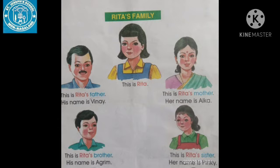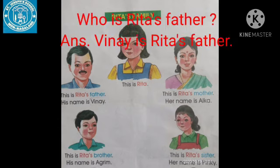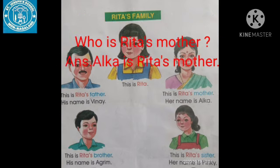Now let us answer some questions. Number one: who is Rita's father? Look at the picture and tell me. Vene — Vene is Rita's father.